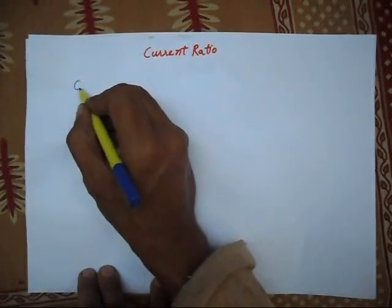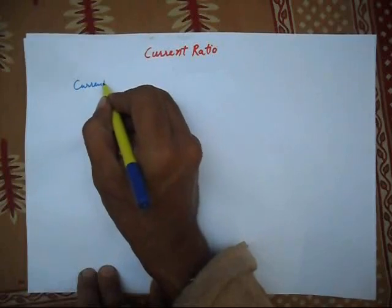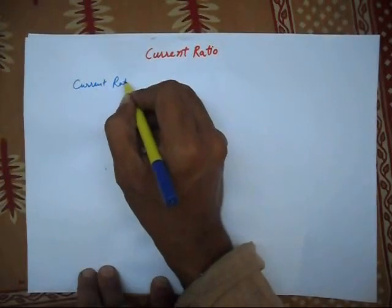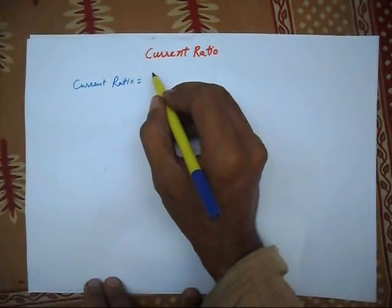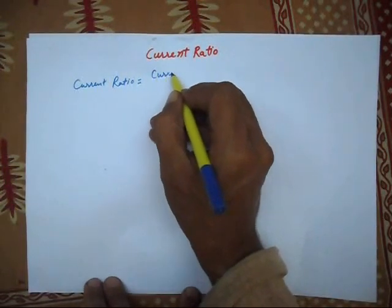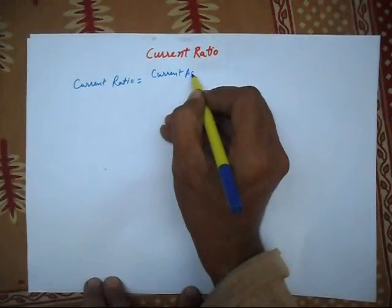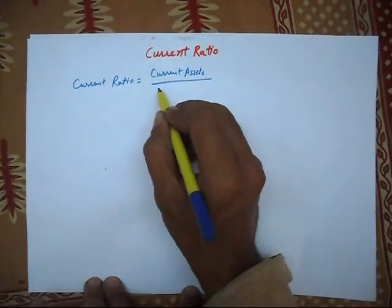We can calculate current ratio by dividing current assets with current liabilities.